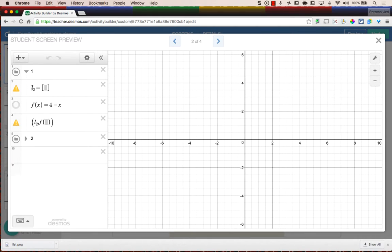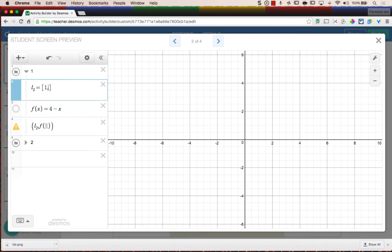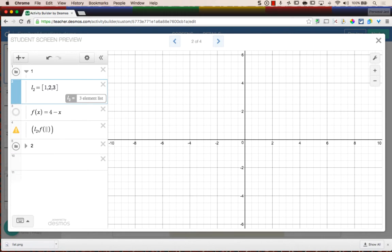I can define a list here by typing a letter, I can have a subscript, or just a letter by itself. And then inside square brackets, all I need to do is add some numbers separated by commas. For example, I have 1, 2, 3.